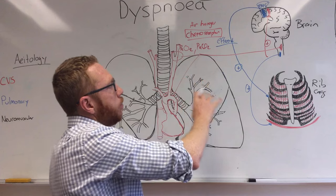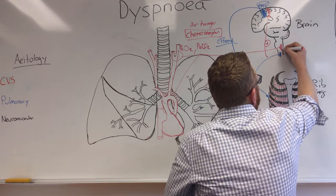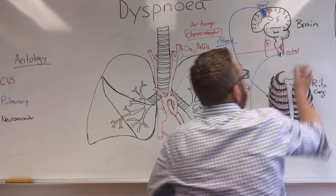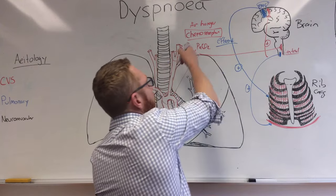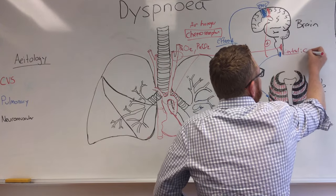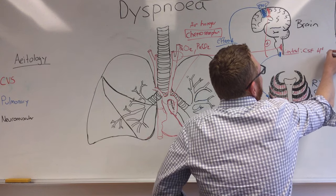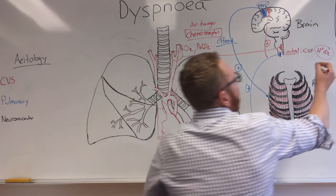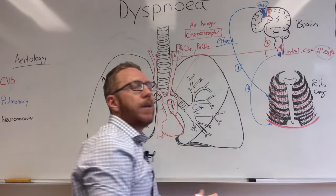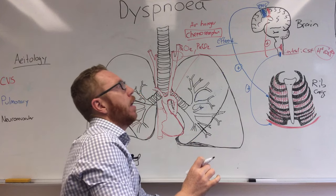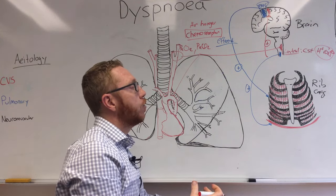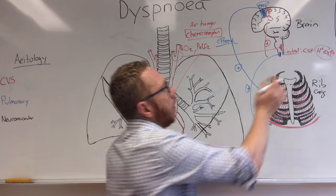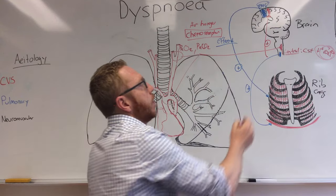You've also got central chemoreceptors, which are actually in the medulla. These are picking up CSF rather than blood, particularly for hydrogen ions and CO2. Now, if you were to have hypercapnia — so increased CO2 — you would probably have a direct air hunger experience. You would directly feel like you need more air, so that would be directly dyspnea-inducing just by having high CO2 from the central receptors.